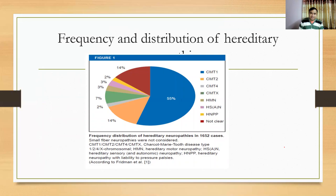Looking at the frequency and distribution of hereditary neuropathies, as shown in this picture, Charcot-Marie-Tooth type 1 (CMT1) accounts for 55 percent, CMT2 for 14 percent, and CMTX for 7 percent. So approximately 70 to 75 percent of cases are CMT1, CMT2, and CMTX; other CMT variants are less common.